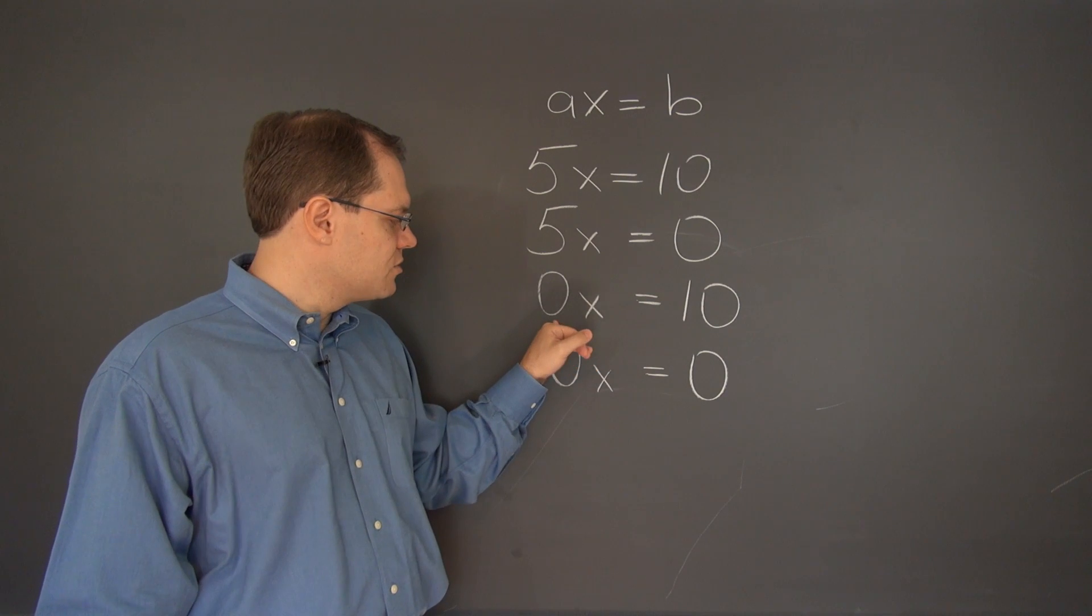The answer is just b over a, 2 in this case, 0 in this case. Moving on to the third equation, we have to say that there are no solutions because 0 times any number would be 0, and it's impossible to get 10. So no solutions in this case.